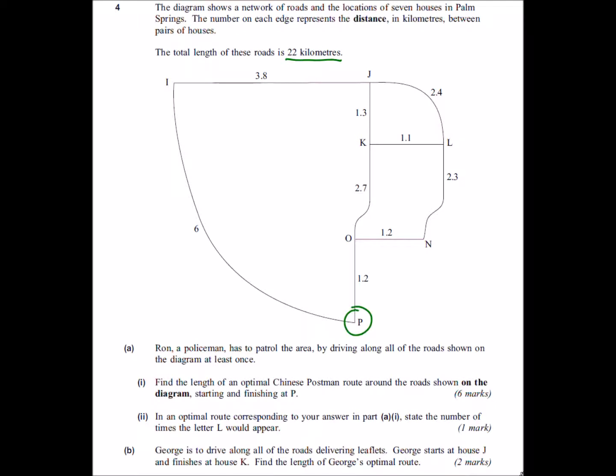So the Chinese Postman algorithm says that we need to find all our odd nodes. In the Use of Maths paper we would expect there to be four. So we've got O, we've got K, we've got J and we've got L.